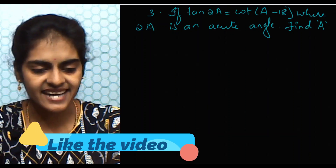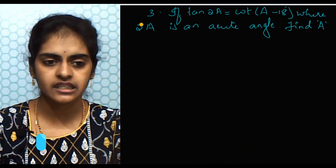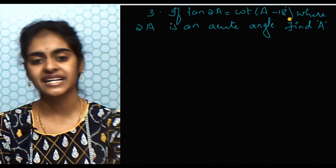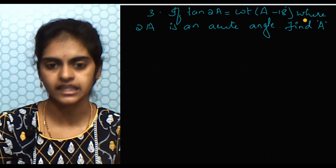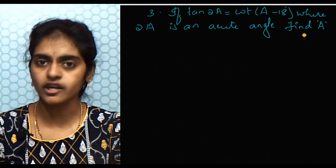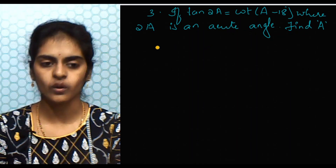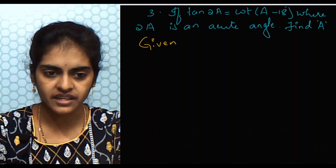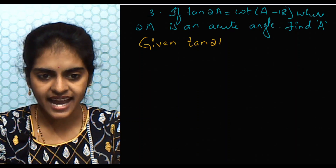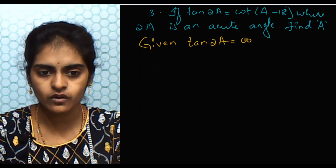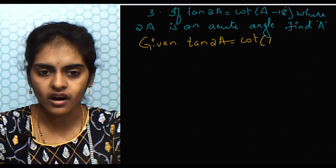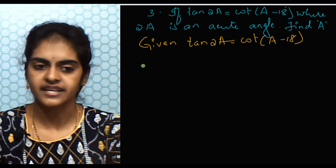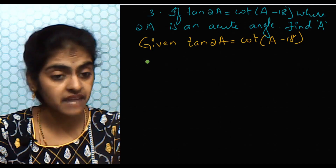Let's get started. Question three: if tan 2A equals cot(A − 18), where 2A is an acute angle, find the value of A. Given: tan 2A = cot(A − 18).